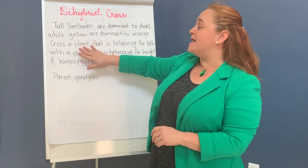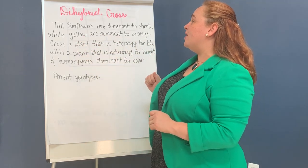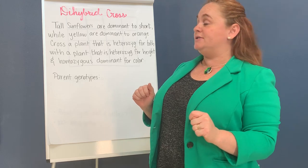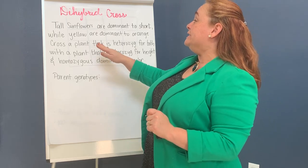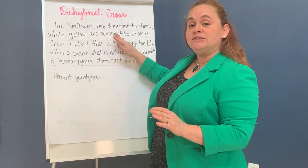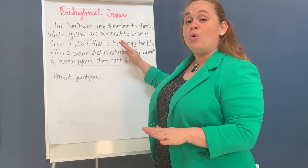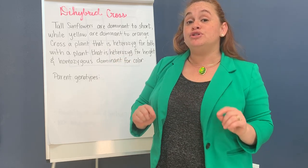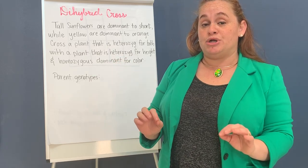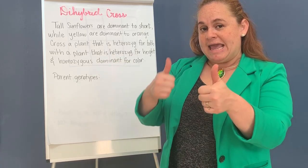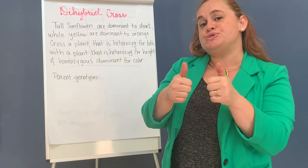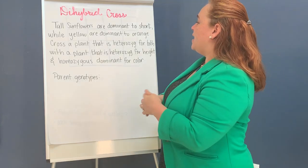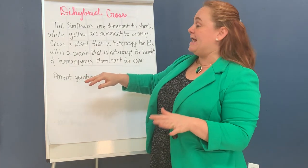The first problem says tall sunflowers are dominant to short, while yellow sunflowers are dominant to orange. So what are the two traits that we're looking for? Height and color — those are the two traits that we're looking at.